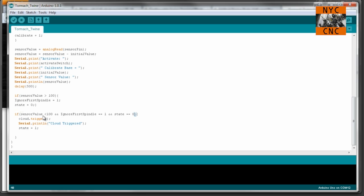To get a text message, it needs to see that the sensor value is below 100, it needs to see that we've already had the spindle above 100, which we did by this ignore first spindle if statement here.